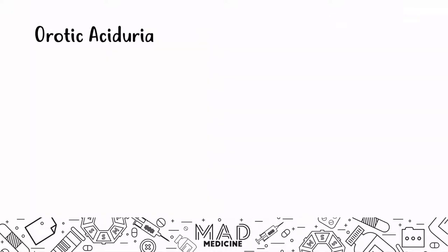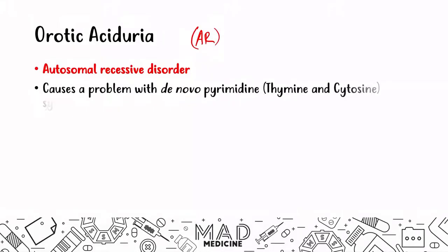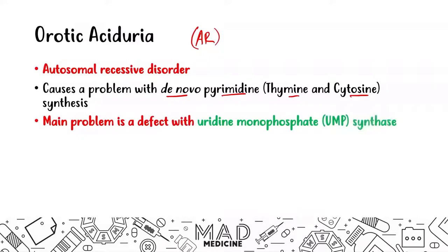Now let's talk about orotic aciduria. This is an autosomal recessive disorder — very important to understand the genetics because test takers like to ask about these. Orotic aciduria is usually caused by a problem with de novo pyrimidine synthesis. Remember the pyrimidines — thymine and cytosine. If you have an issue with the synthesis of thymine and cytosine, you can see orotic aciduria. The main problem is with an enzyme: uridine monophosphate synthase, or UMP synthase.